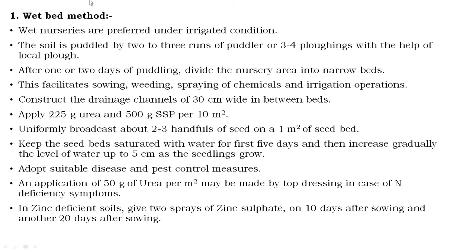In the case of the wet bed method or wet bed nursery, this nursery is prepared under irrigated conditions where irrigation sources are plentiful. The soil is puddled by two to three runs of puddlers or three to four plowings with the help of a local plow. After one to two days of puddling, divide the nursery into narrow beds to easily facilitate intercultural operations like sowing, weeding, spraying of chemicals, as well as irrigation operations. Then construct drainage channels of 30 cm wide in between the beds.